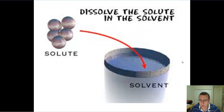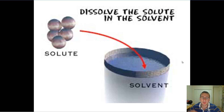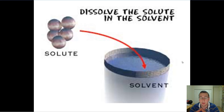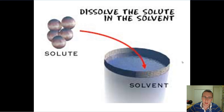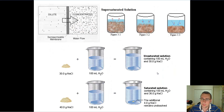In a solution, you have two parts: the solvent and the solute. The solvent is what you put the solute into. For example, water is the solvent in a water-sugar mixture, and the sugar is the solute — the thing that's dissolving. The thing that does the dissolving is the solvent.